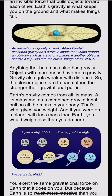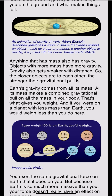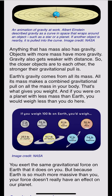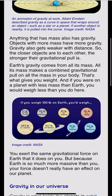Earth's gravity comes from all its mass. All its mass makes a combined gravitational pull on all the mass in your body. That's what gives you weight. And if you were on a planet with less mass than Earth, you would weigh less than you do here.